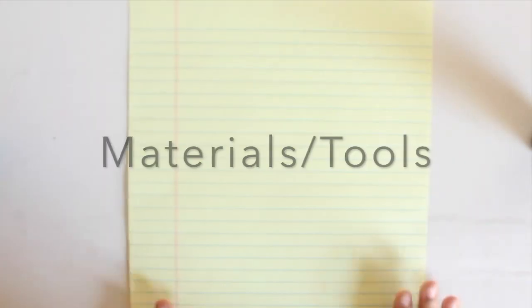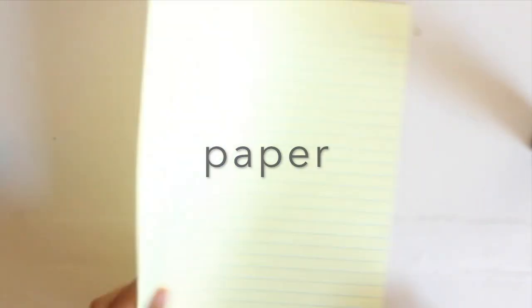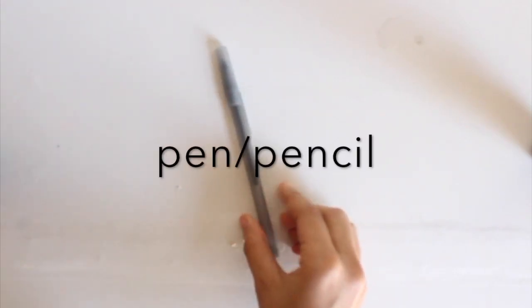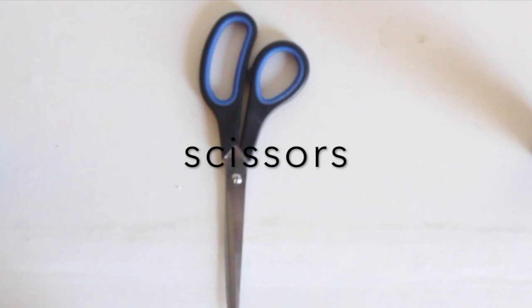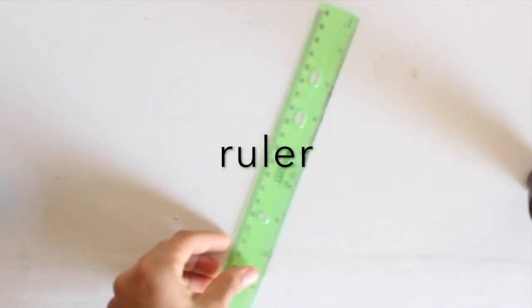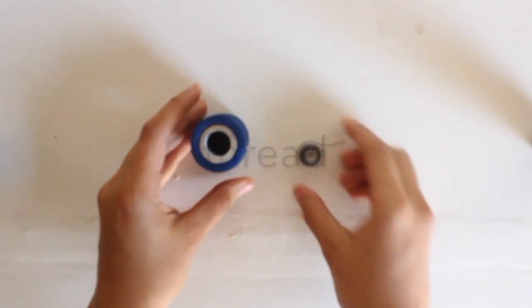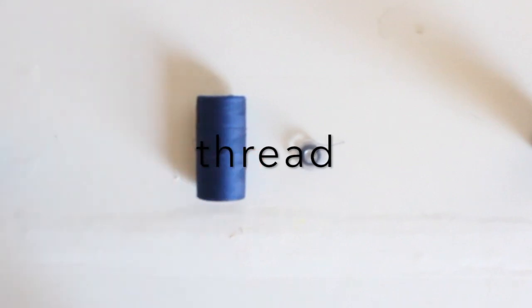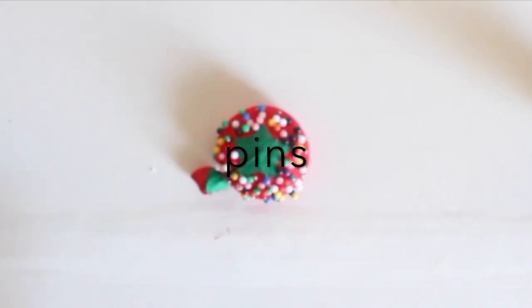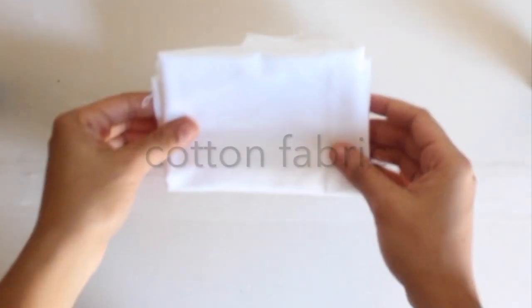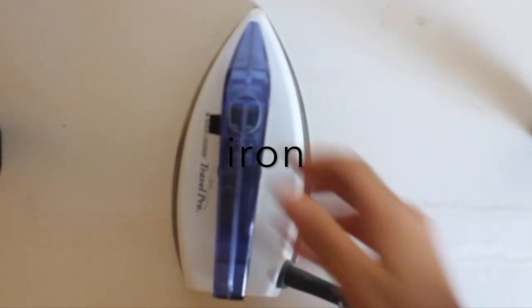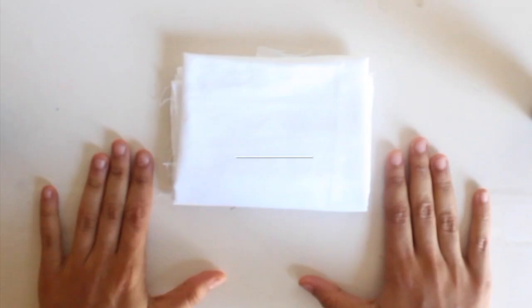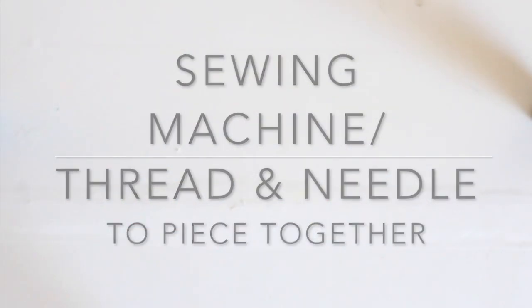For this project, you're going to be needing some paper, a pen or pencil, scissors, a ruler, thread, pins, cotton fabric, an iron, and a sewing machine or a thread and needle to piece everything together.